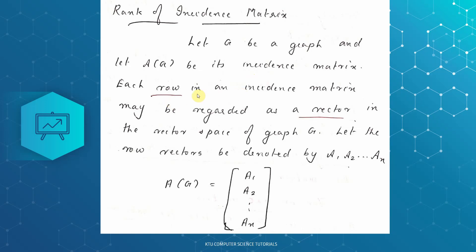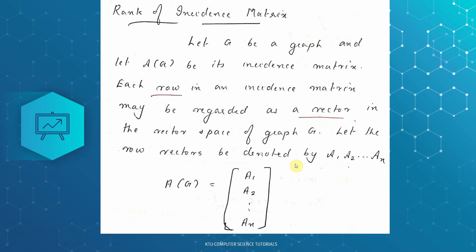In the incidence matrix, one row corresponds to one vertex. So each row is considered as a vector representing that vertex.